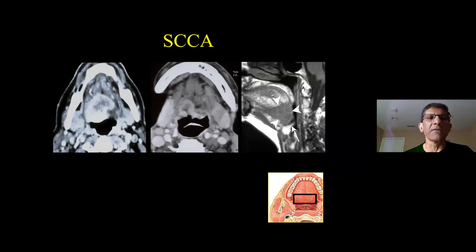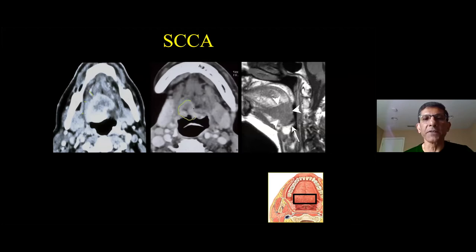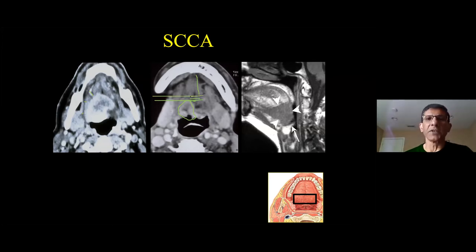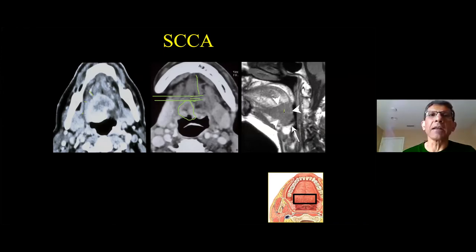These are examples of run-of-the-mill squamous cell carcinoma involving the tongue base. If you see a lesion involving the right lateral aspect of the tongue base, this is how I would contour it. The genioglossus-geniohyoid complex comes into the tongue base, which typically contains a fair amount of fat. By far and away, if you're looking at an abnormality involving the tongue base that is a tumor, it's going to be squamous cell carcinoma.